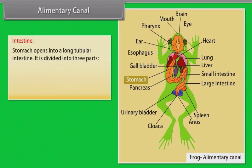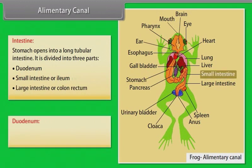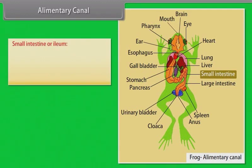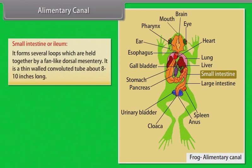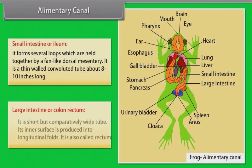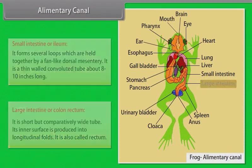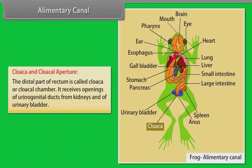The stomach opens into a long tubular intestine divided into three parts: duodenum, small intestine (ileum), and large intestine (colon/rectum). The duodenum is the anterior U-shaped part of the intestine lying parallel to the stomach. The small intestine or ileum forms several loops held together by a fan-like dorsal mesentery; it is a thin-walled convoluted tube about eight to ten inches long. The large intestine or colon rectum is short but comparatively wide, with longitudinal folds on its inner surface. The distal part of the rectum is called the cloaca or cloacal chamber, which receives openings of urinogenital ducts from the kidneys and of the urinary bladder.